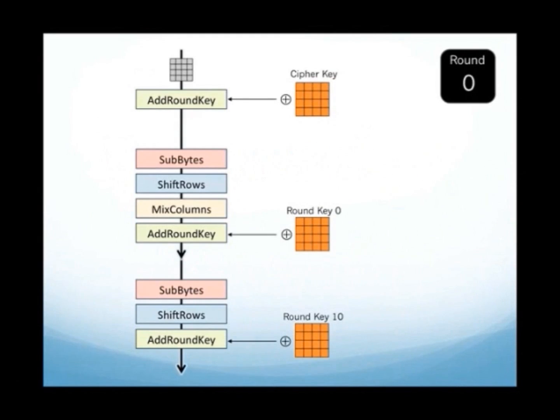Encryption process: First of all, the incoming plaintext block is copied onto the state matrix and an initial addition of a round key is executed. After this step, the nine key-dependent rounds are carried out, which perform the transformation of the state matrix.